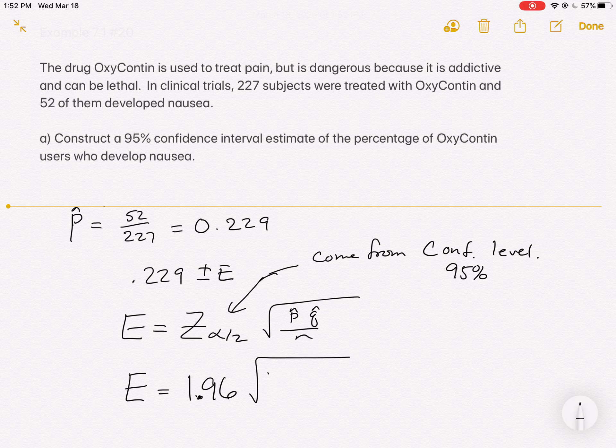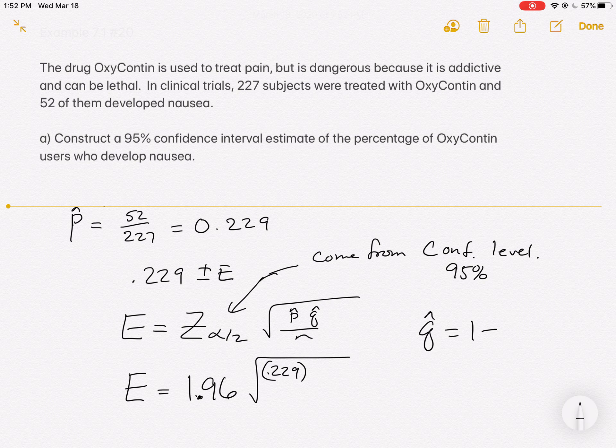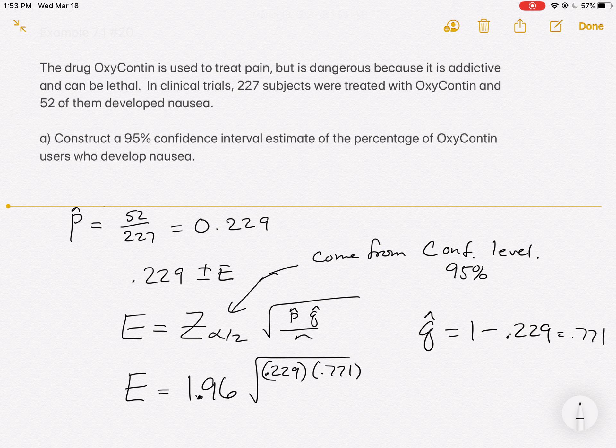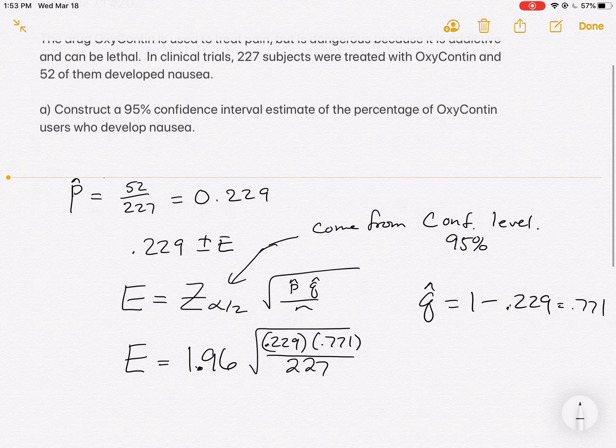P hat, we calculated as 0.229. Q hat will be 1 minus that. So if we look at 1 minus 0.229, we get 0.771. So this is 0.771. And then they told us how many users we were dealing with. We were dealing with 227. That is going to calculate our error.